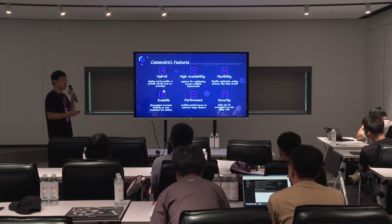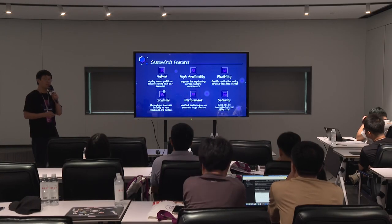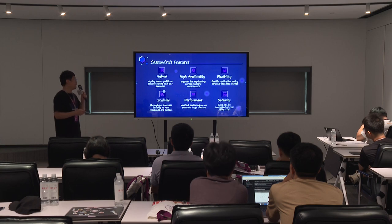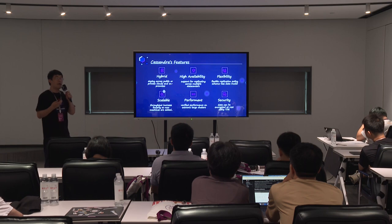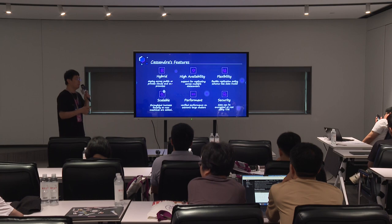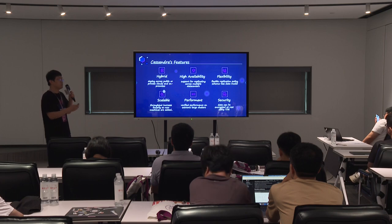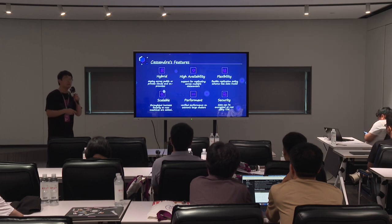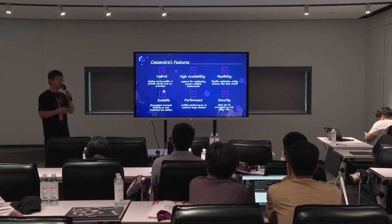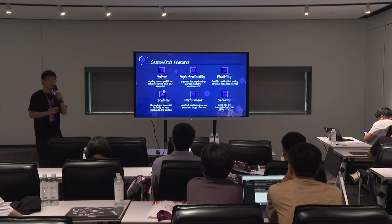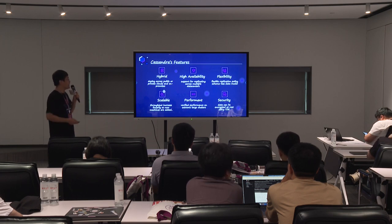Cassandra has many good features. The first one is hybrid: it can deploy across different public or private clouds and also on-premise. Cassandra has very good HA, with support for replication across multiple data centers. Even if one data center fails, you will not lose any data. Next is flexibility: Cassandra has very flexible replication policies. You can have eventual consistency or very strong consistency, and it also has a schemaless data model. The schemaless model makes it very easy to change columns. Next is scalability: Cassandra is famous for its throughput increasing linearly as new machines are added.